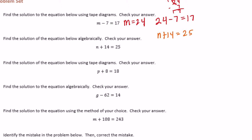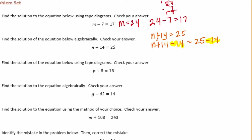So we want to get M by itself. Right now it has plus 14, so to make that just M plus nothing, what we can do is subtract 14 from that. So we'll have M plus 14, and I'm going to add minus 14. What we do to the left side we must also do to the right side, so instead of just 25, it's now going to be 25 minus 14. M plus 14 minus 14 would just be M, and 25 minus 14 is equal to 11. So M equals 11. And we can check: is 11 plus 14 equal to 25? Yes it is.